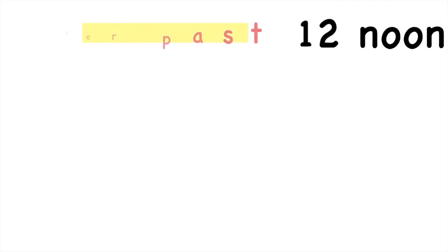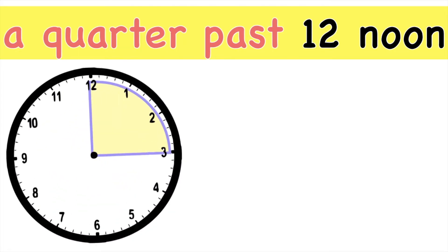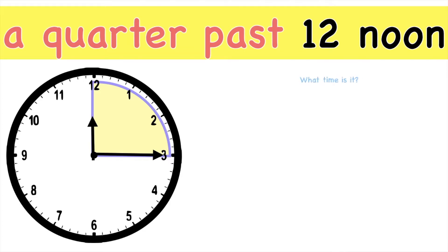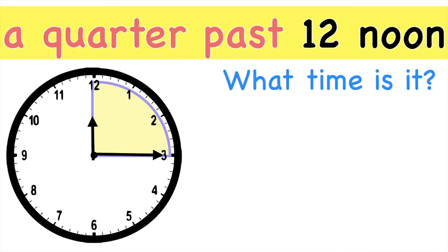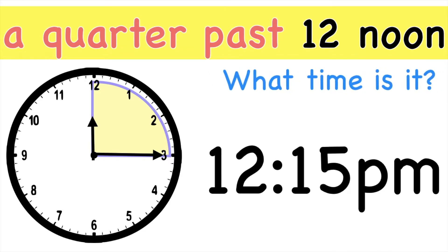How about if we have this? A quarter past 12 noon. What time is it? This is your analog clock. This is 12 noon. Let's count how many minutes pass: 5, 10, 15. So what time is it? Good job! It's 12:15 p.m.